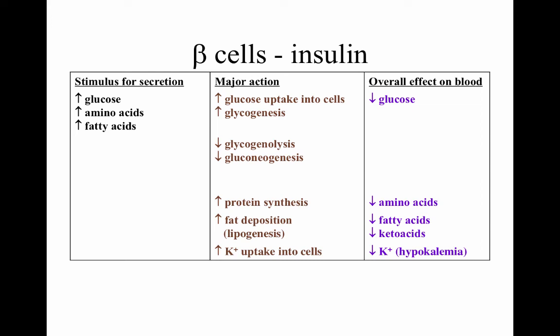Beta cells release insulin stimulated by increased glucose, amino acids, or fatty acids in the bloodstream. Insulin's major action works on body cells to assist with glucose uptake and glycogenesis — storage of glucose usually in the liver or muscles. Glycogenolysis and gluconeogenesis are decreased. Glycogenolysis is the conversion of glycogen to glucose; gluconeogenesis is creation of glucose from non-carbohydrate sources. There is an increase in protein synthesis, fat deposition, and potassium uptake into cells, with an overall effect of decreasing blood glucose, amino acids, fatty acids, keto acids, and potassium. Insulin's effect on the body is overall anabolic or building.